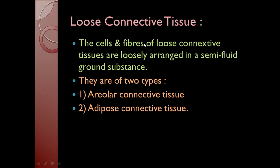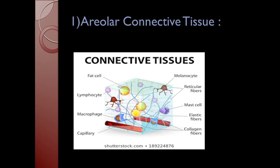The cells and fibers of loose connective tissue are loosely arranged in a semi-fluid ground substance. There are two types: areolar and adipose connective tissue. Areolar connective tissue contains all the cells and fibers in a thin, almost fluid-like ground substance. It is the simplest and most widely distributed connective tissue. Here you can see the structure of areolar connective tissue.